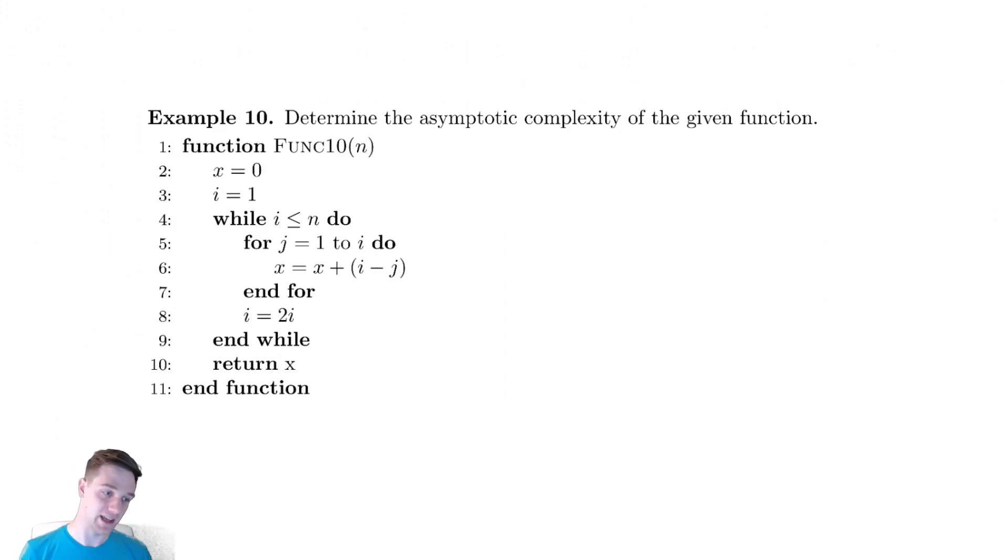For this example we are now nesting a for loop inside of a while loop. This is the opposite of what we'd seen in the past where we have nested a while loop inside of a for loop. So let's get to it.